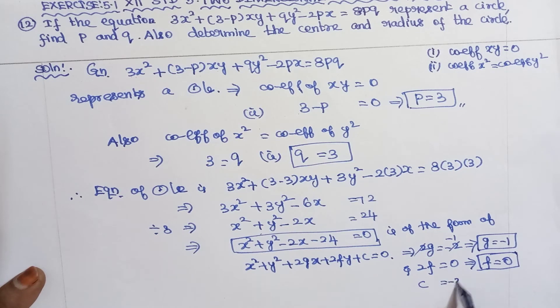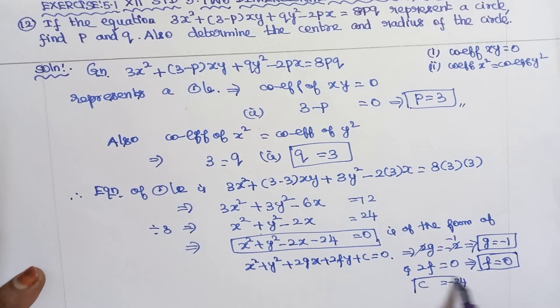From the comparison, 2f = 0 so f = 0. The constant term gives c = -24.